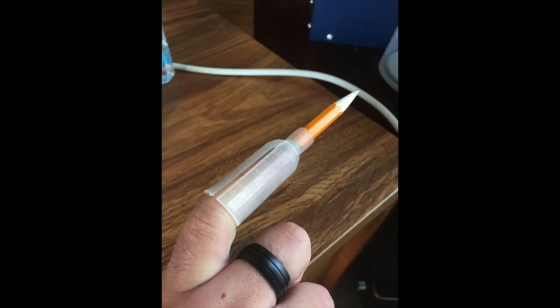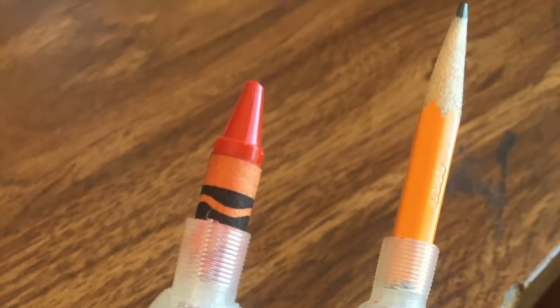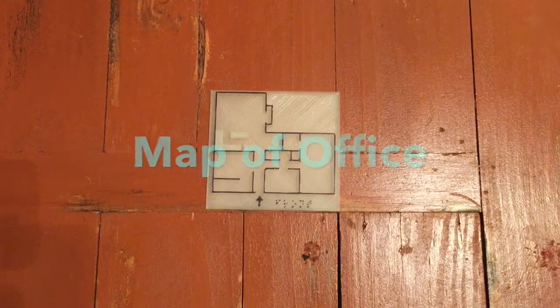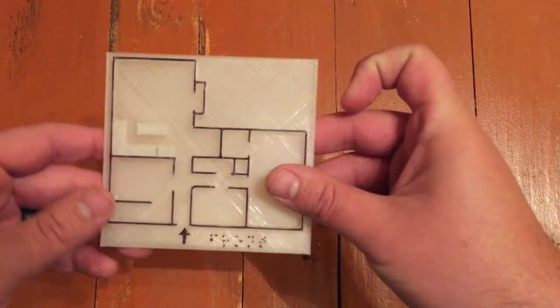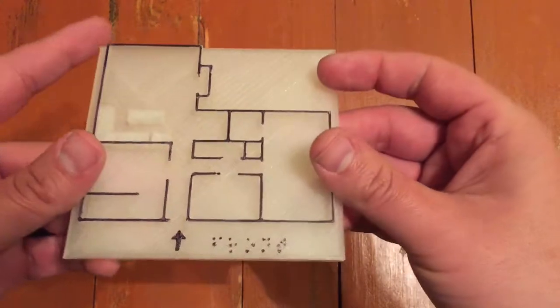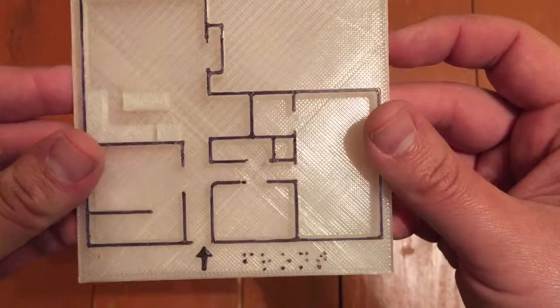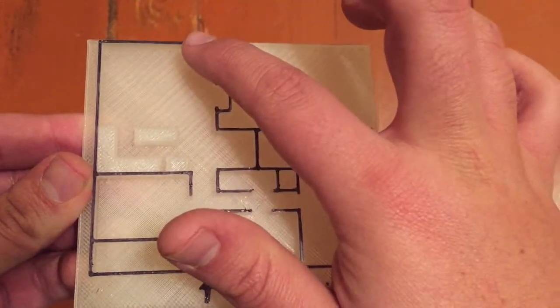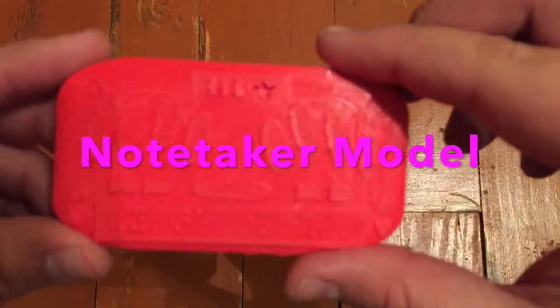Map of our office: This is a 3D printed map of our office. Here's the kitchen, and that's where I work. Note taker model: